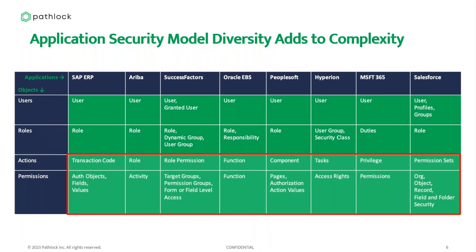Application security diversity adds to complexity. It's not only the number of applications but the differences between them that exacerbate this challenge. Looking across a handful of applications — users, roles, actions, and permissions — the models don't line up. Most applications have users, but some also consider profiles, groups, and granted users. Most have a role of some type, but others have dynamic groups, security classes, or call them duties.